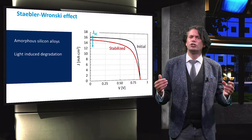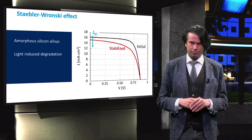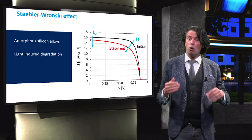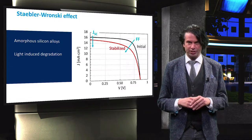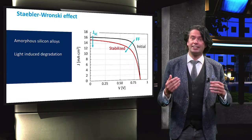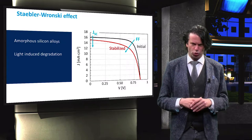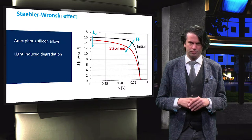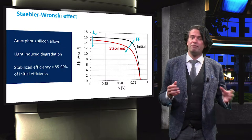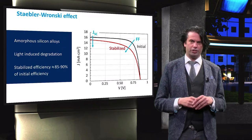The short circuit current density, on the other hand, decreases due to the reduced charge carrier collection. The fill factor suffers most from the light-induced degradation, since the increased defect density in the bulk increases the series resistance of the solar cell. The stabilized efficiency is generally about 85 to 90 percent of the initial efficiency.